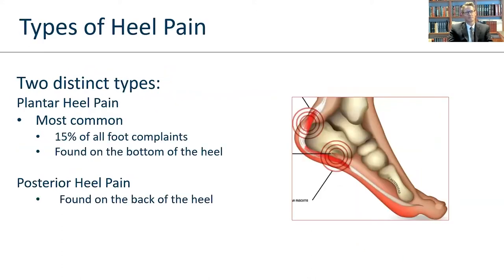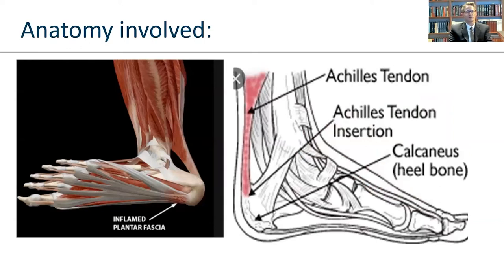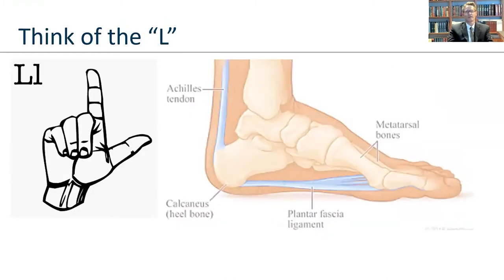There are two distinct types of heel pain: plantar heel pain, which is on the bottom — that's 15% of all foot complaints — and posterior or back-of-the-heel pain. The anatomy involved: the inflamed plantar fascia on the bottom, and the Achilles tendon on the back. Think of the letter L — your Achilles tendon comes down and hooks into the heel, then shoots out into the plantar fascia. So it's all one unit; injure one and it can injure the other.